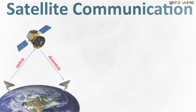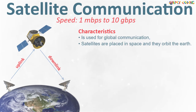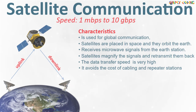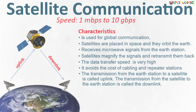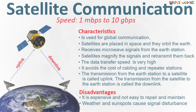Next is satellite communication. The data transmission speed is between 1 Mbps to 10 Gbps. It is used for global mobile communication. Satellites are placed in space and orbit the Earth. They receive microwave signals from Earth stations, magnify the signal, and retransmit them back to Earth. The data transfer speed is very high and it avoids the cost of cabling and repeater stations. The transmission from the Earth station to a satellite is called uplink, and the transmission from the satellite to the Earth station is called the downlink. Its disadvantage is that it is very expensive and not easy to repair and maintain. Weather and sunspots can also cause signal disturbance.